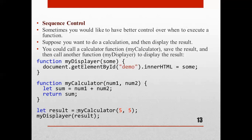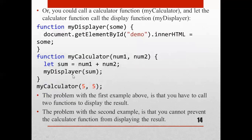We call myDisplay to display the result. For example: let result = myCalculator(5, 5), passing values to myCalculator, and then calling myDisplay(result) to display it. This is one way to control the sequence. Alternatively, we could let the calculator function itself call the display function directly.